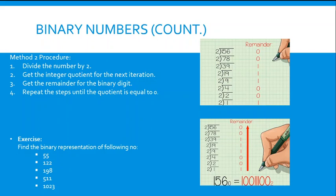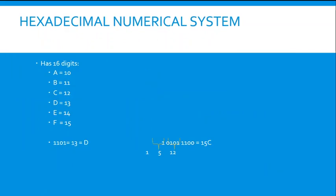Hexadecimal numbers go from 0 to 9 and A to F, where A=10, B=11, C=12, D=13, E=14, F=15. For example, binary 1101 equals 13 or D in hexadecimal. And 10110 1100 — 15 is F and 12 is C — as you can see: values 15 and 12 from the animation.